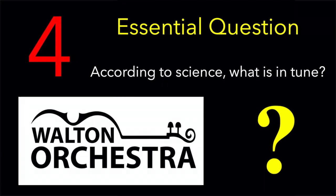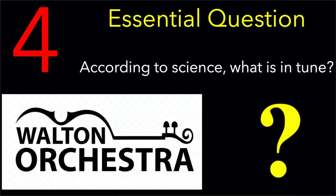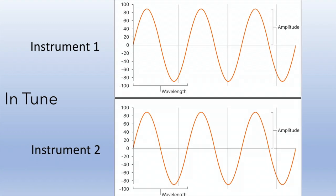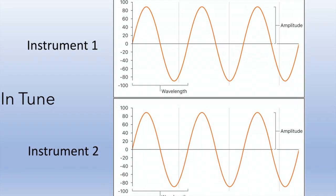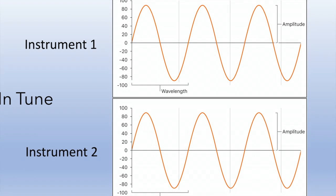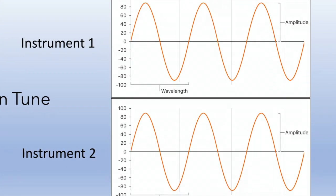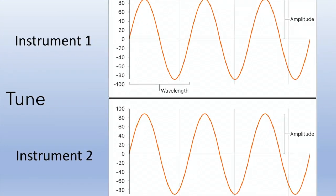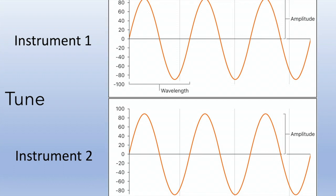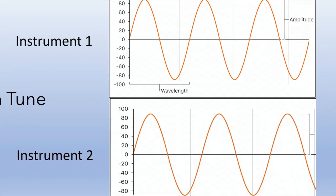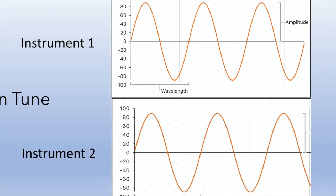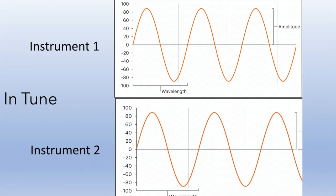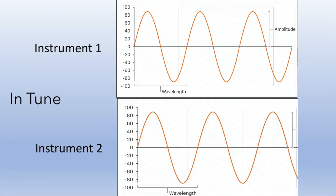From a scientific standpoint, two pitches or instruments are considered to be in tune when their waves line up. Look at this example — the peaks and valleys of these sound waves line up exactly. So we could say that two violinists whose A strings are both vibrating 441 times a second are perfectly in tune. Conversely, if the waves do not line up, they would be considered out of tune — like one violinist playing A vibrating 441 times a second and the other at 437.